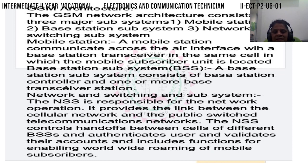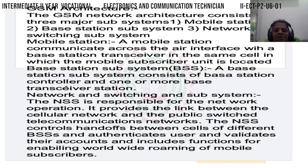GSM network architecture consists of 3 major subsystems: First, the mobile station; second, the base station subsystem; third, the network and switching subsystem. A mobile station communicates across the air interface with a base station transceiver in the same cell in which the mobile subscriber unit is located.